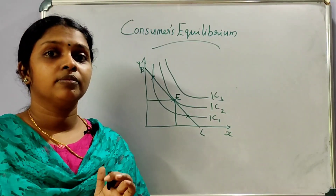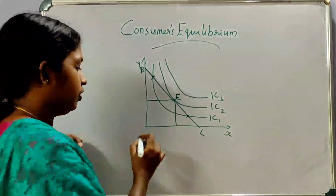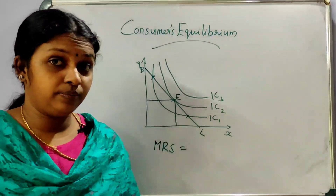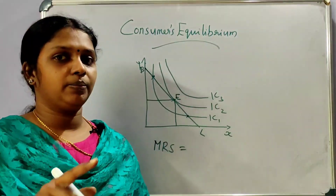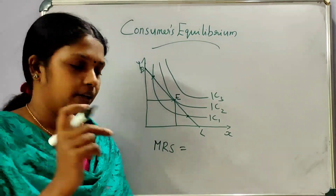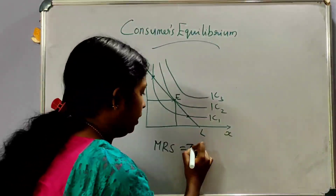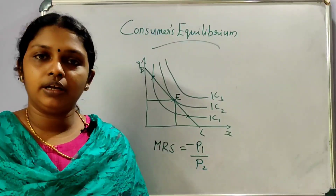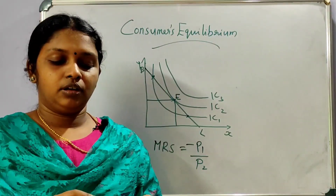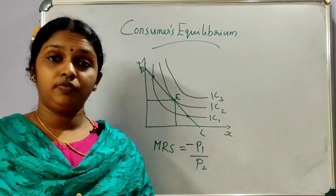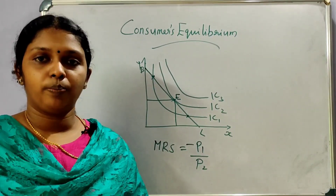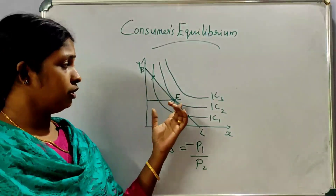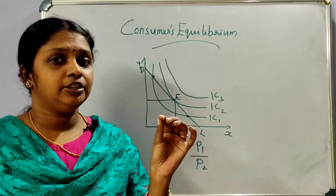What is MRS? What is the price line slope? The price line slope is equal to minus P1 by P2. The budget line and indifference curve slopes must be equal — the indifference curve is tangent to the budget line.